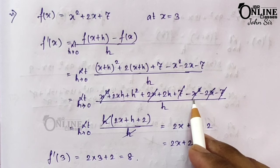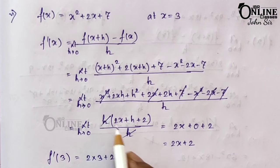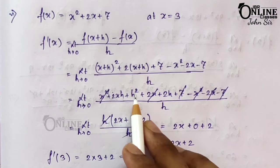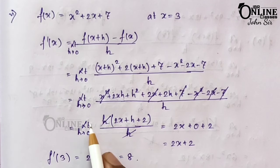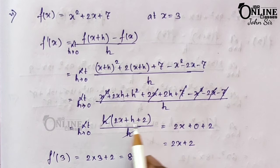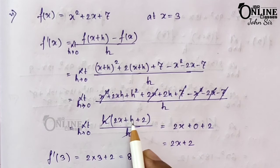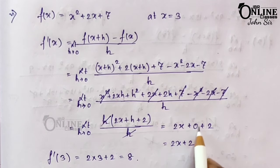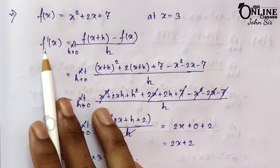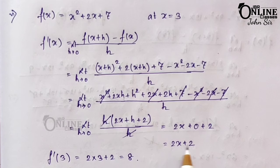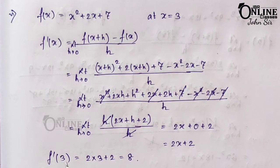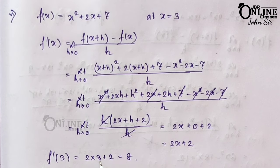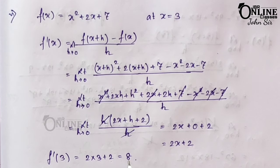After cancellations of x², 2x, and 7 terms, take h as common: limit h→0 of [2x + h + 2]. After h cancels with denominator, substituting the limiting value: 2x + 0 + 2 = 2x + 2. So f'(x) = 2x + 2. Therefore f'(3) = 2(3) + 2 = 8.